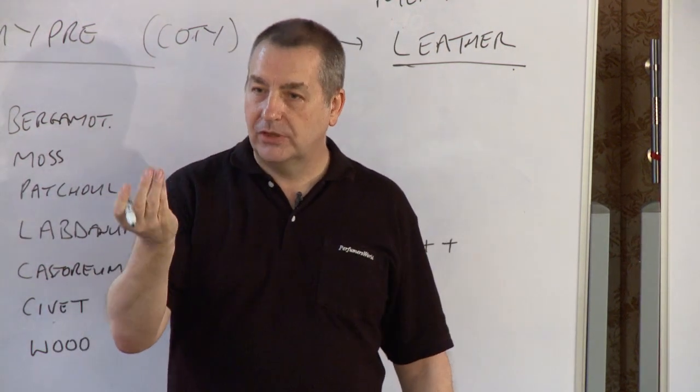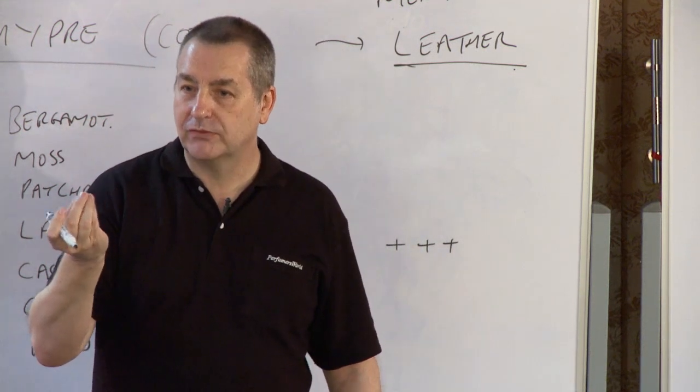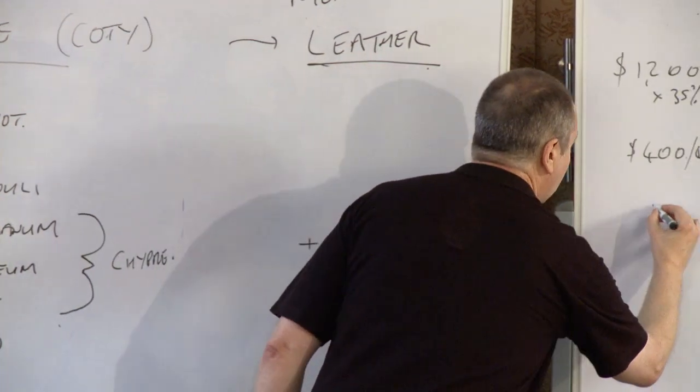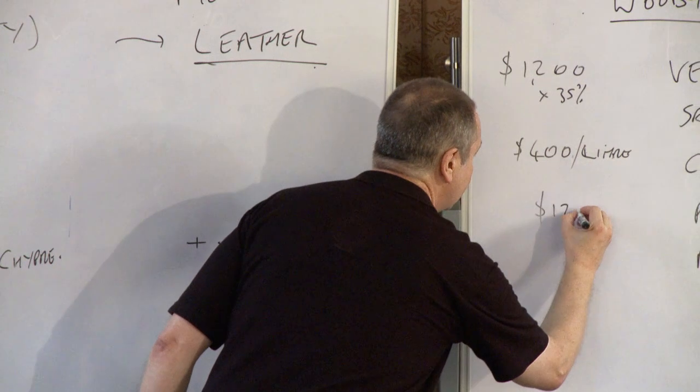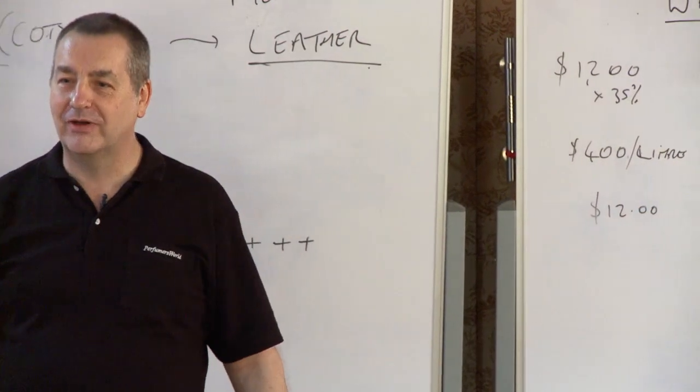So a 30ml bottle is going to cost how much? $12? Yeah, $12 for a one ounce bottle. How much do you buy for a one ounce bottle of Chanel No. 5? $200? $300?